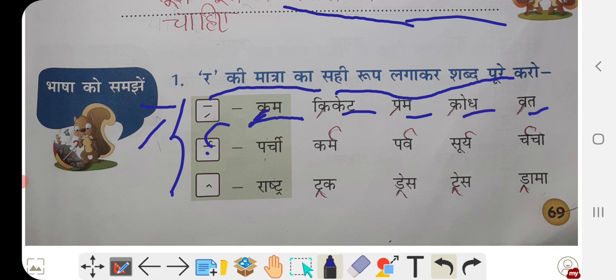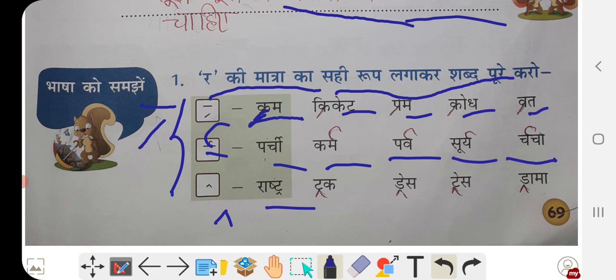This is also ra ki matra: parchi, karma, parva, surya, charcha. Then like this in the next set: rashtra, trak. Rashtra means national. Then truck, dress, drama — these all use ra ki matra.